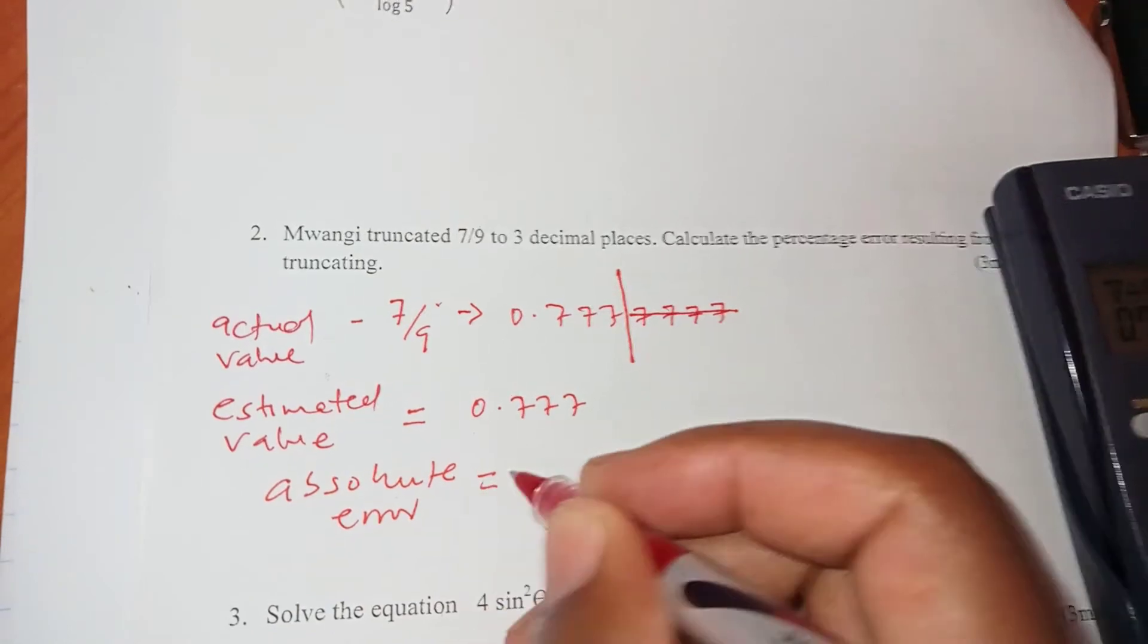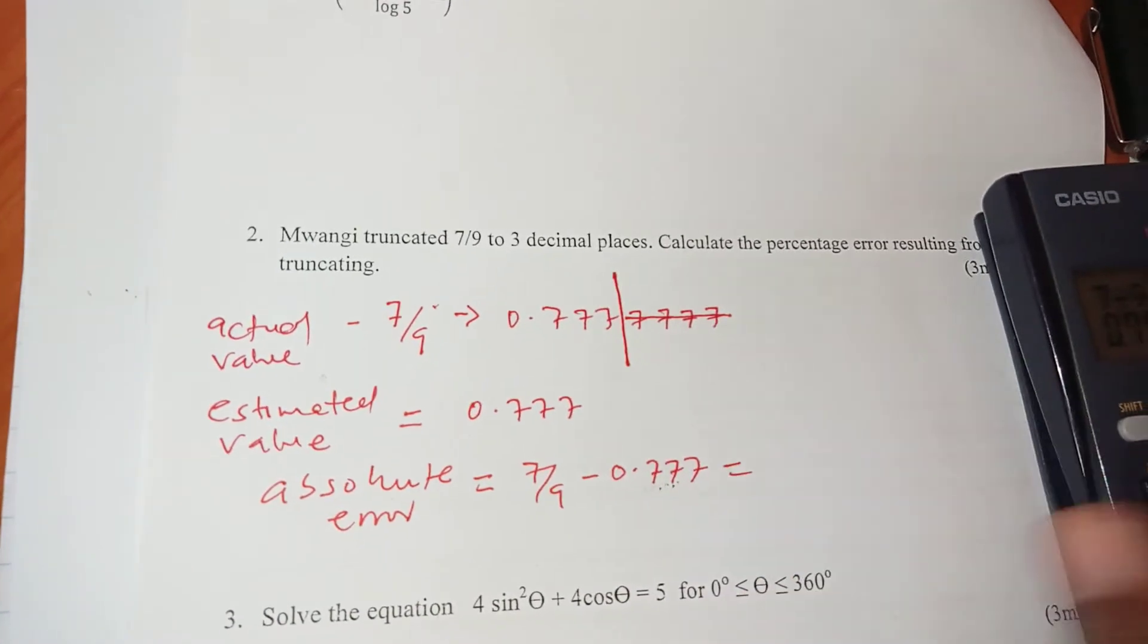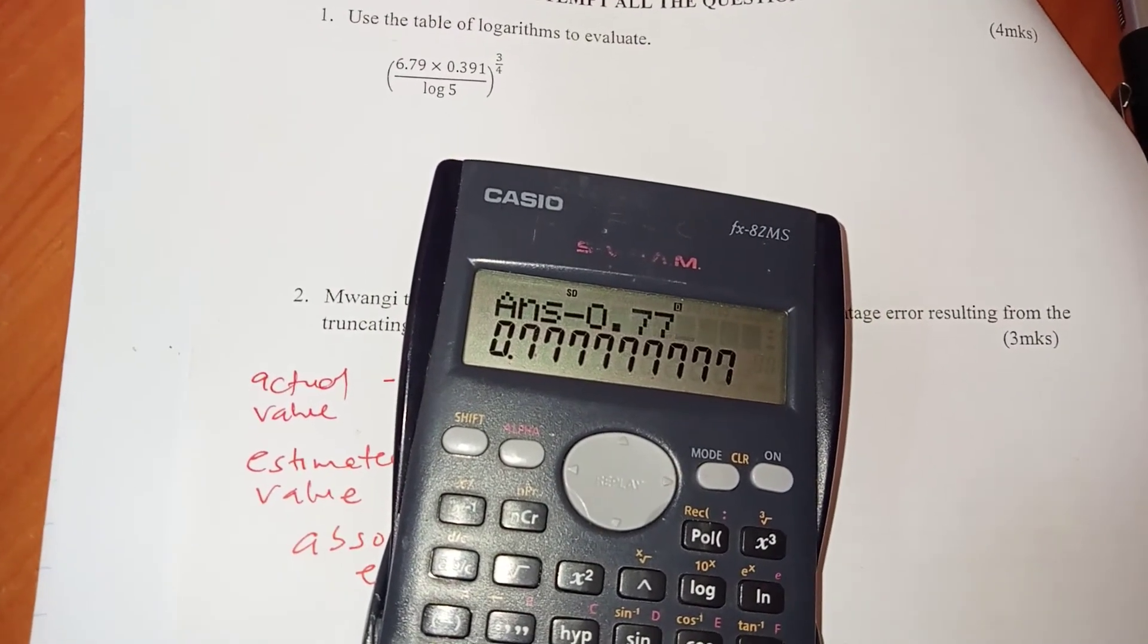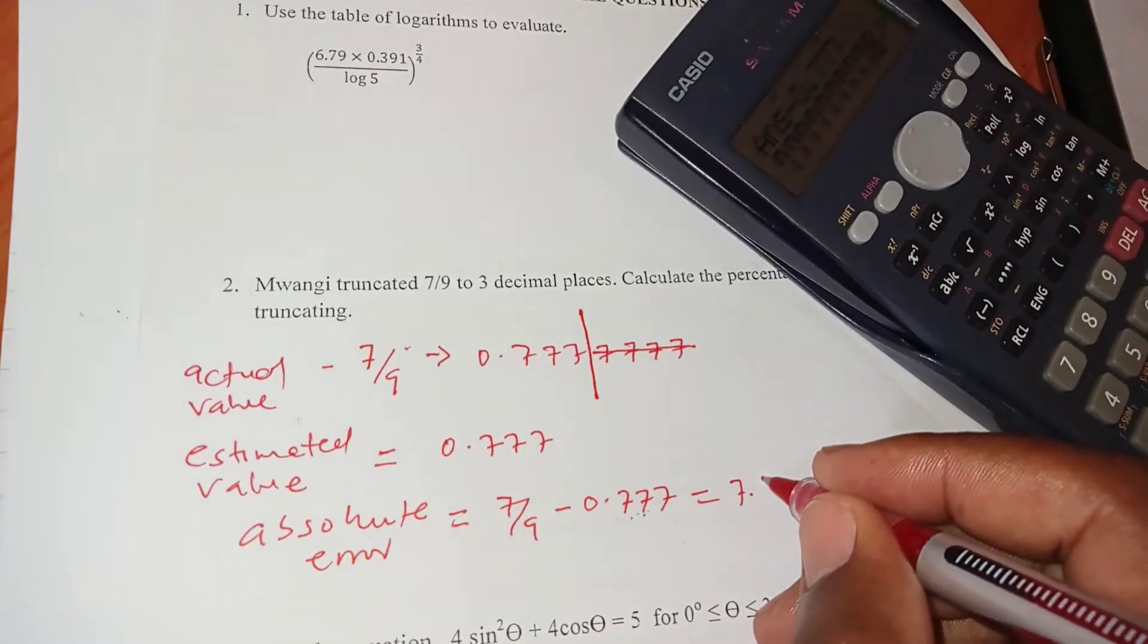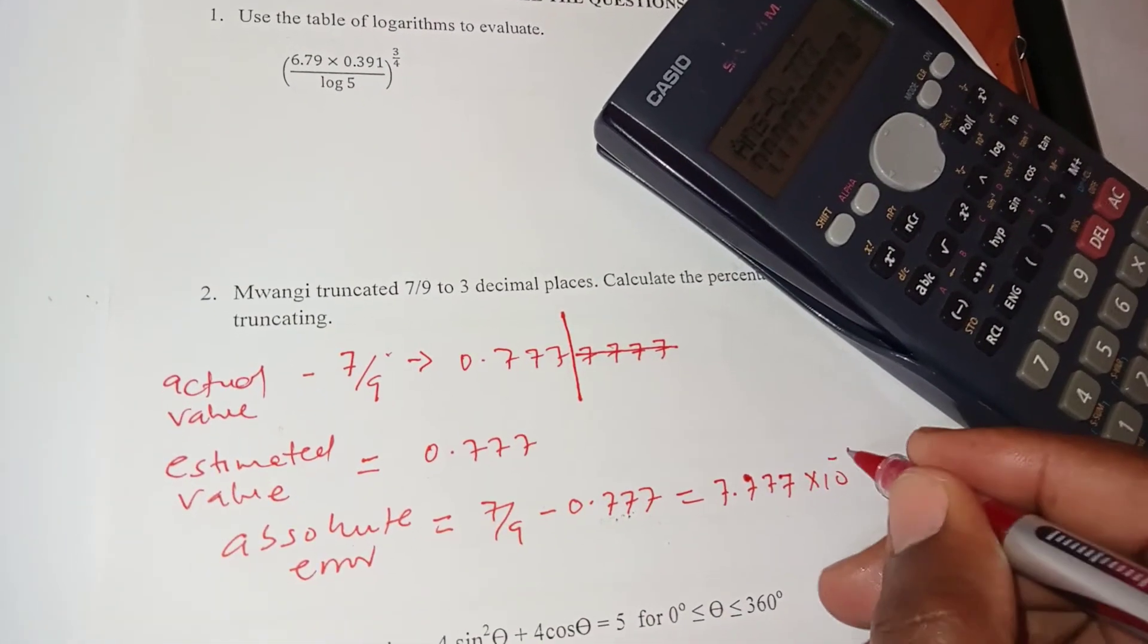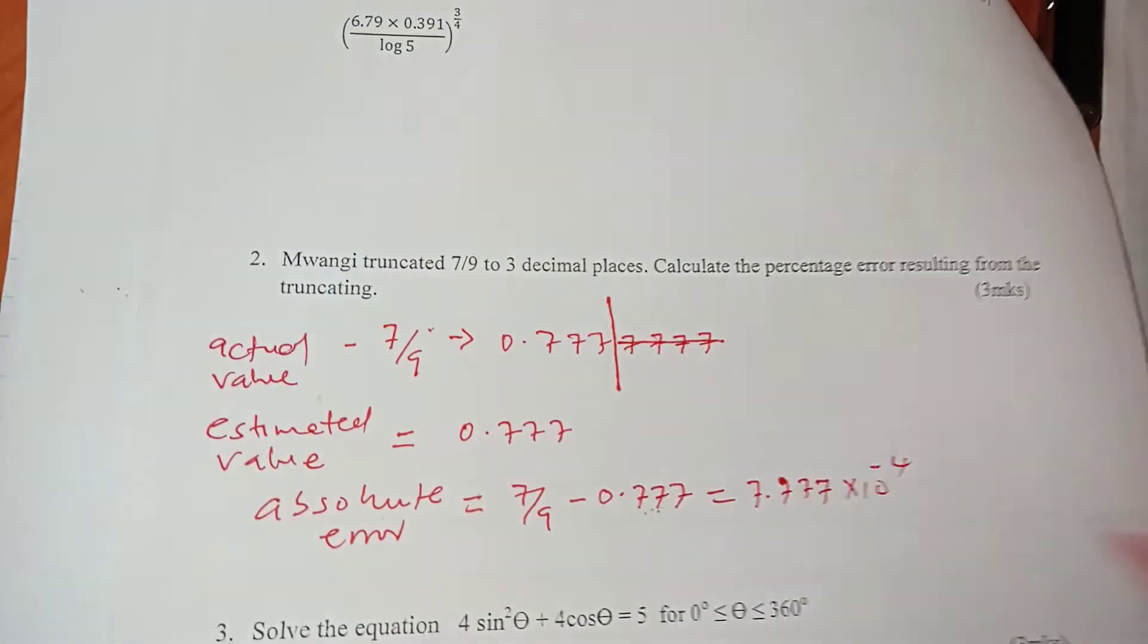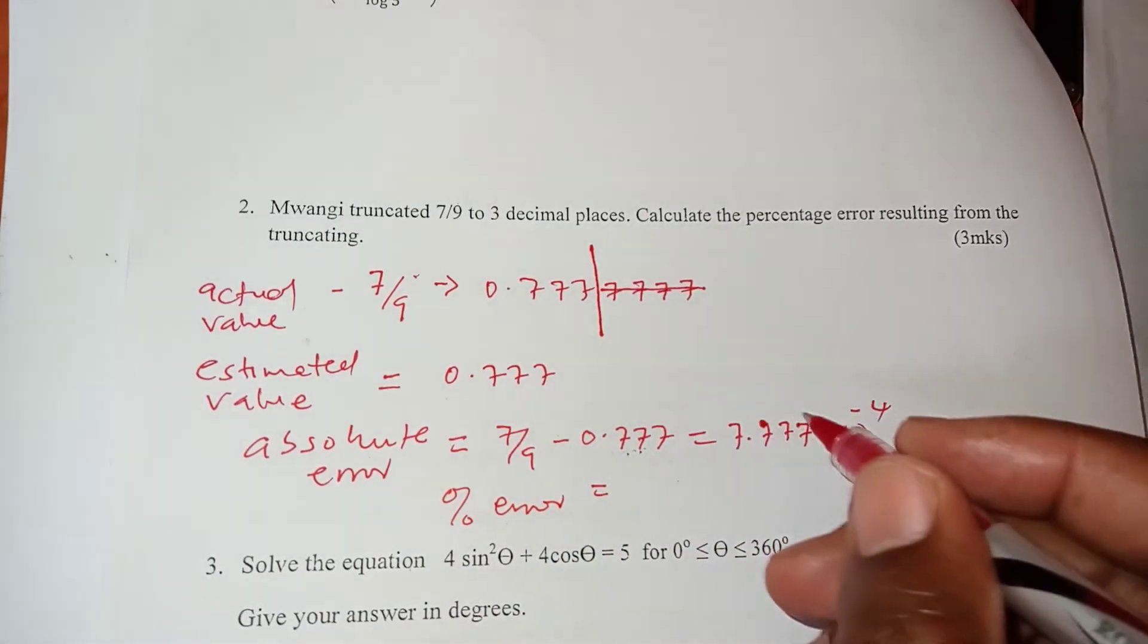And so when you get the difference between this and that will give you the absolute error. So absolute error here or the error itself we have 7 over 9 minus 0.777 and this gives me - so 7 divided by 9 minus 0.777. That gives me - I'll write it in standard form rather - 7.77777 times 10 to power minus 4.